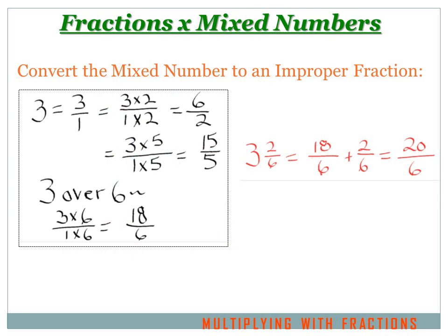Let's talk about multiplying a fraction times a mixed number. The first step in multiplying a fraction times a mixed number is to convert the mixed number to an improper fraction.